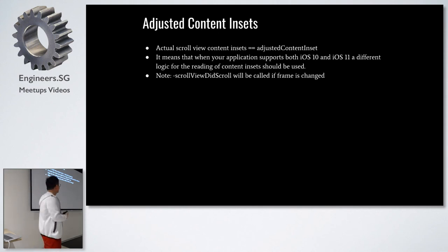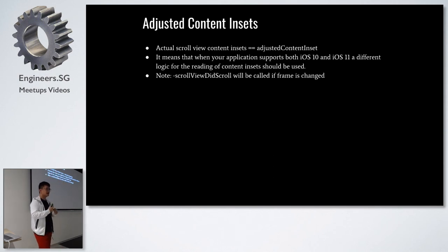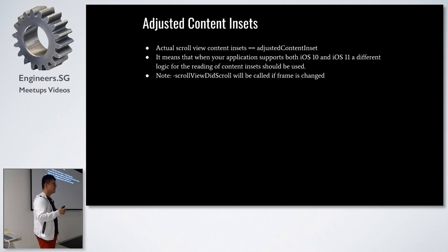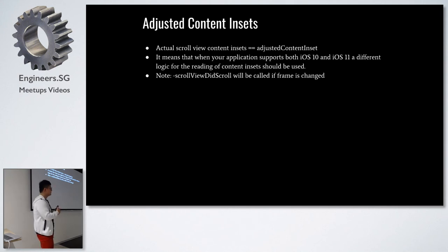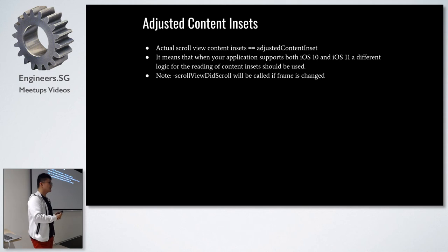Another thing we noticed: the scroll view delegate method `scrollViewDidScroll` will be called if you change the frame of a scroll view. Pay special attention to this if you have any logic relying on each other. For example, in `scrollViewDidScroll` you trigger something that changes the frame, then when the frame changes your delegate is called again — you might end up in an infinite loop. Be careful with this.